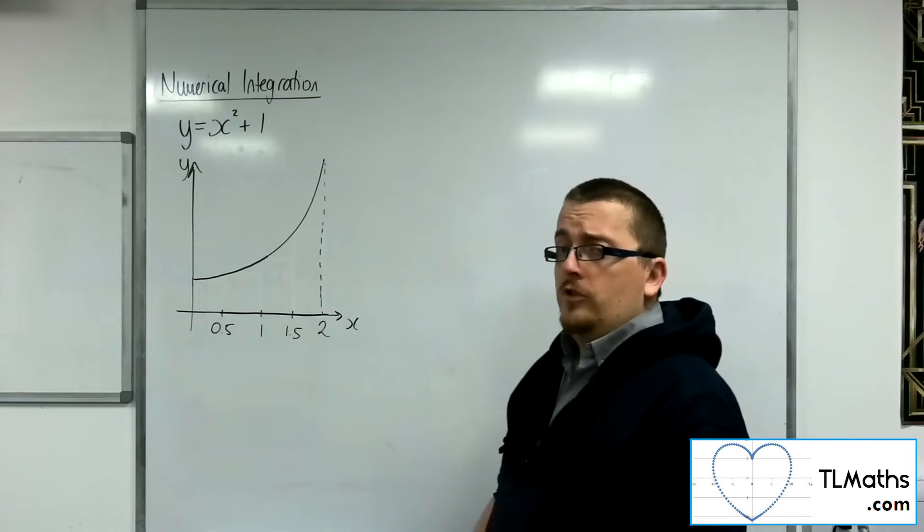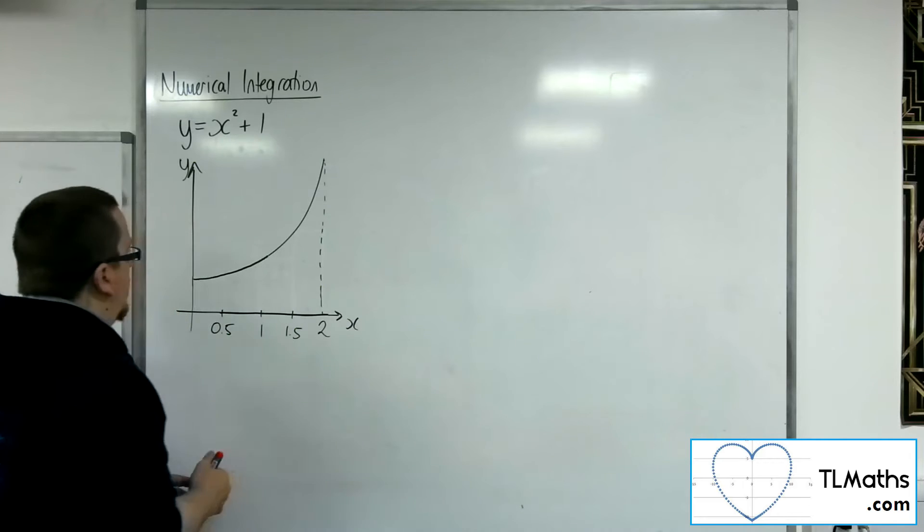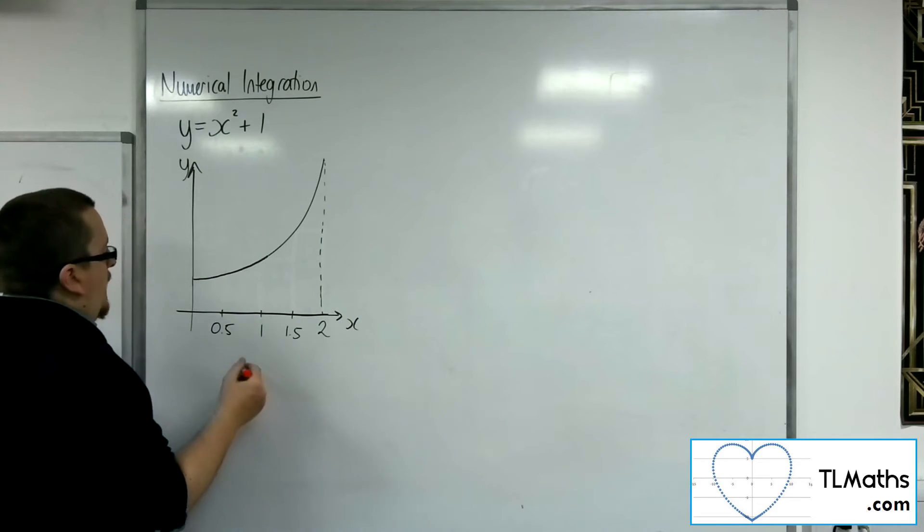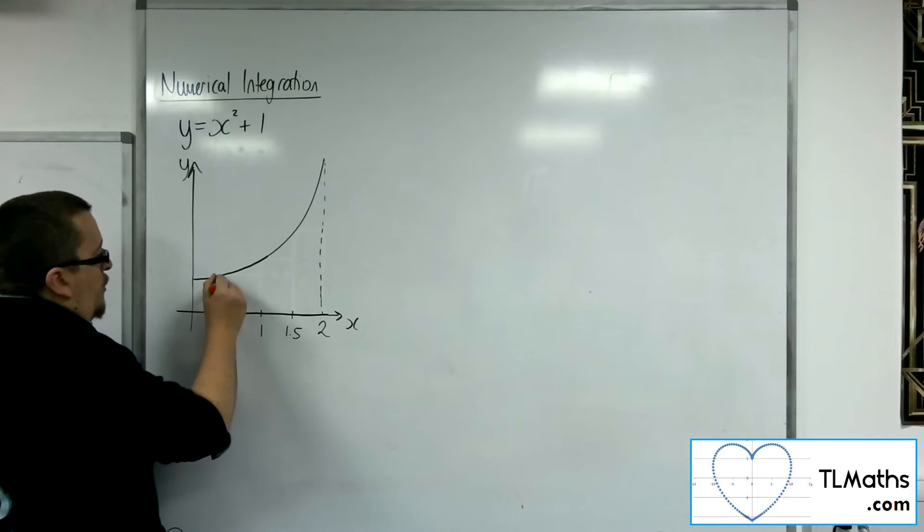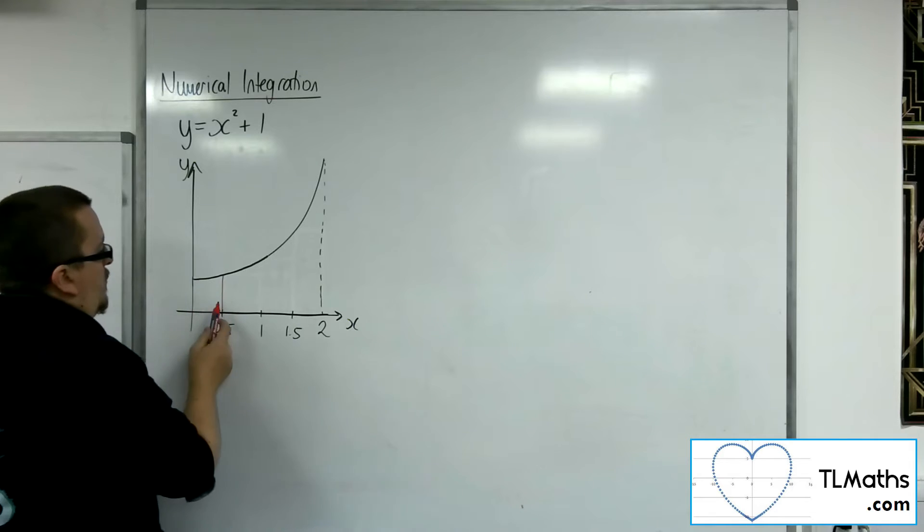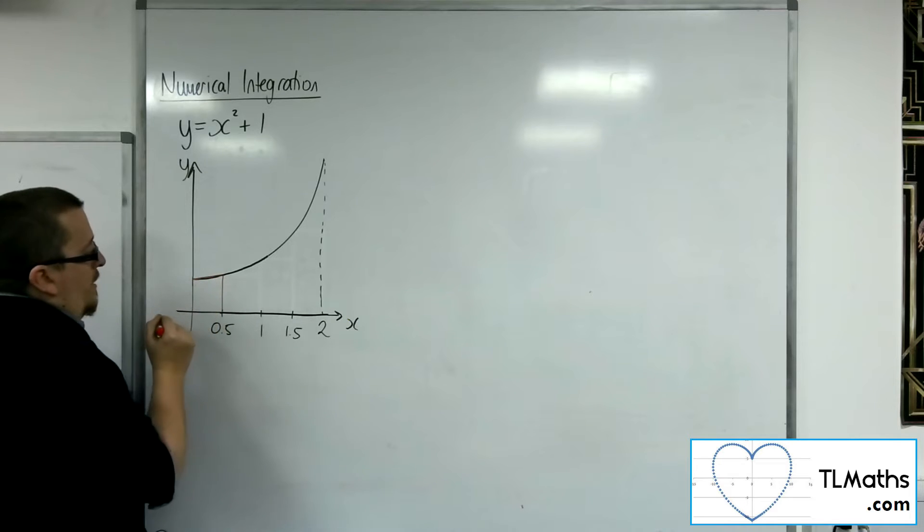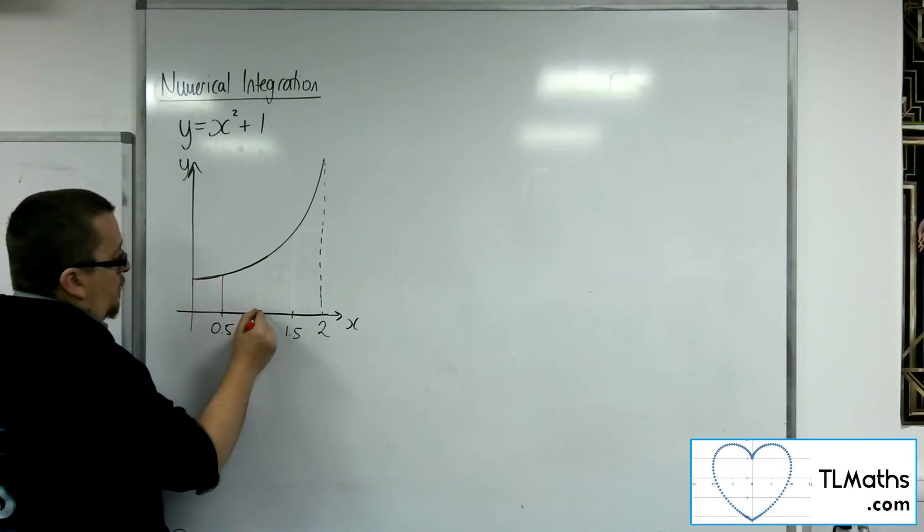If we use trapeziums, however, the idea with that is that if I draw a strip between 0 and 0.5, then I'm going to estimate this area by just joining this end point to that end point with a straight line, creating that trapezium.